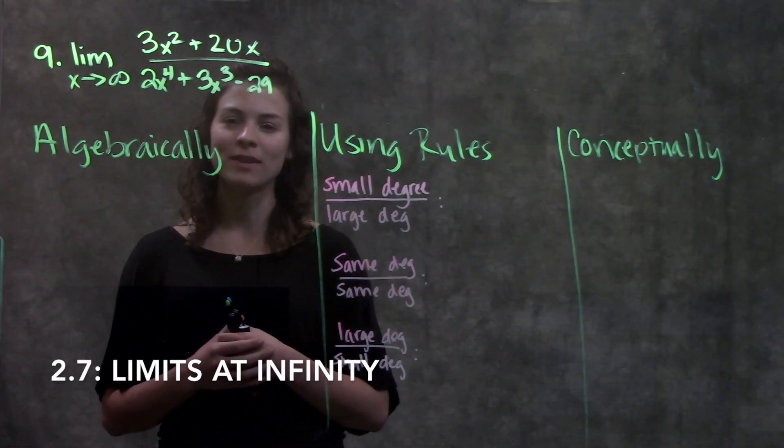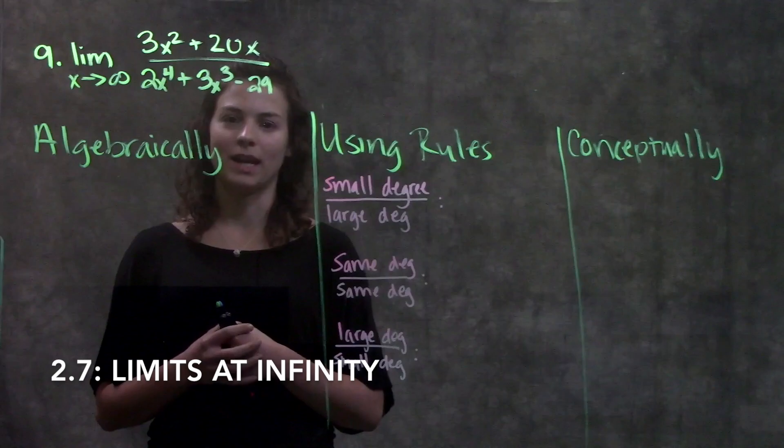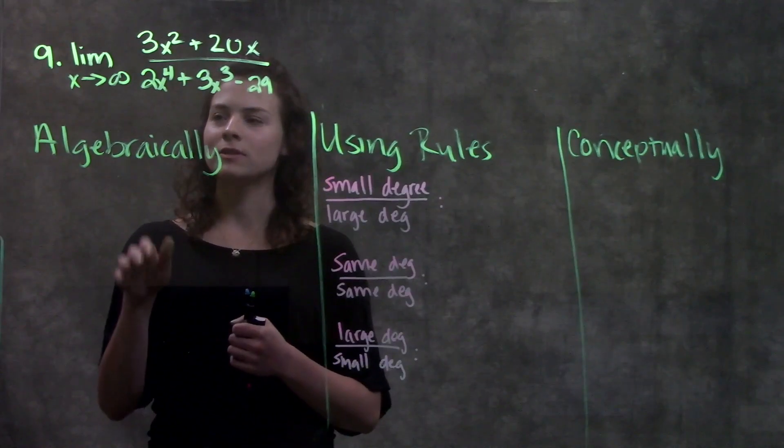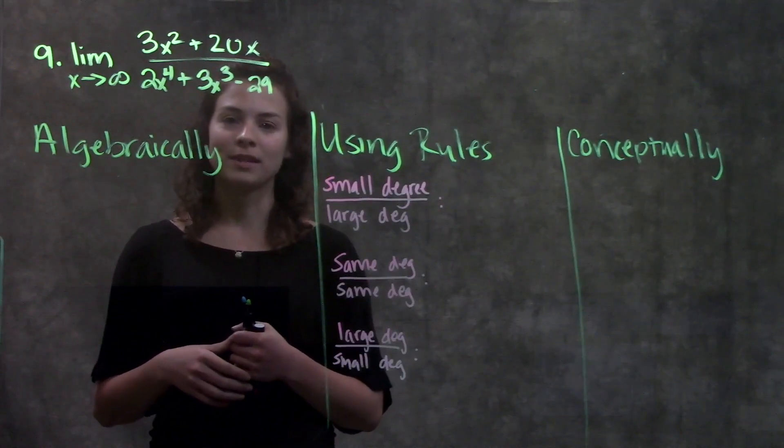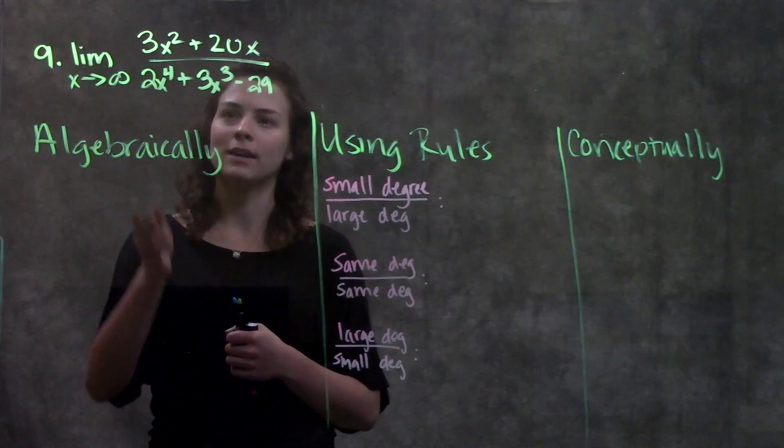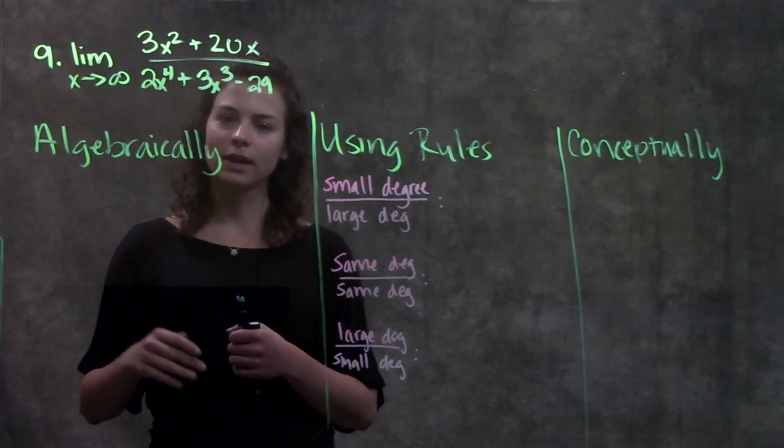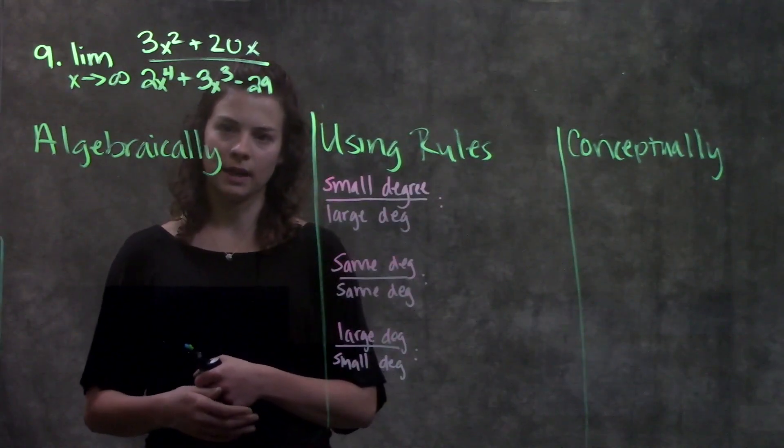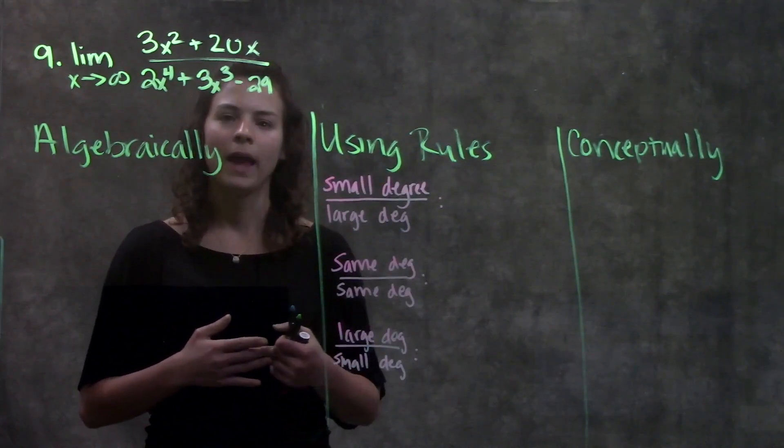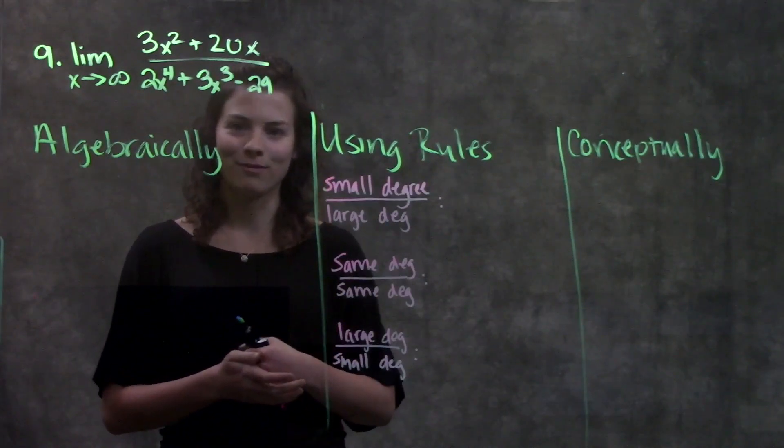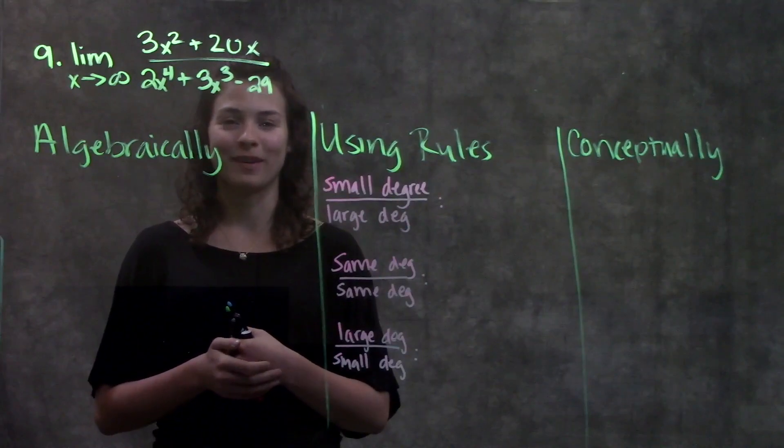This video is for section 2.7, solving limits as they approach infinity. We're going to go through problem number 9 in your textbook, the limit as x approaches infinity of this function, and we're also going to go through three different ways to approach these types of problems and how to think about them. Hopefully at least one of these ways will work well for you and you'll be able to better understand this section.